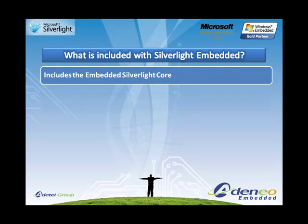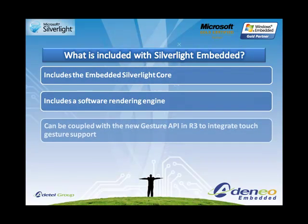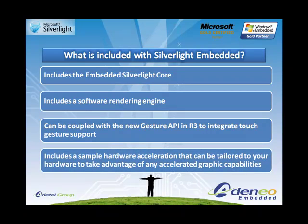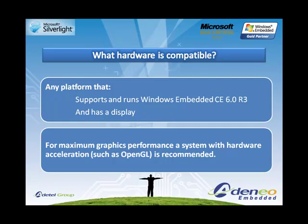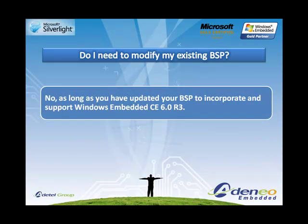The embedded version of Silverlight includes the core rendering engine as well as other APIs. It also includes a sample demonstrating how to accelerate your platform for Silverlight Embedded. Any platform with a display that can run Windows Embedded CE 6.0 R3 can also use Silverlight. For maximum performance, some work towards acceleration may be required within the platform itself. Beyond that, no other modification is required to your BSP. Silverlight Embedded is integrated into CE 6.0 R3 as a catalog item; by selecting that item, the new API set and rendering engine will also be added to your OS design.